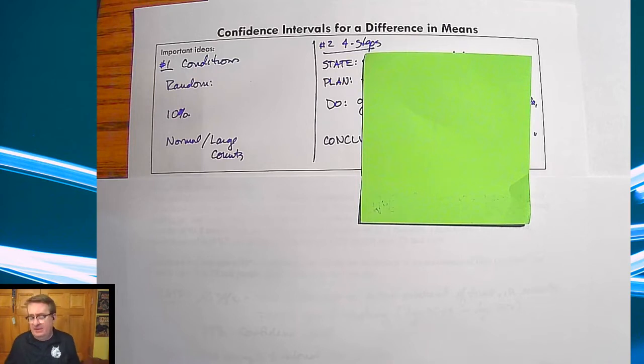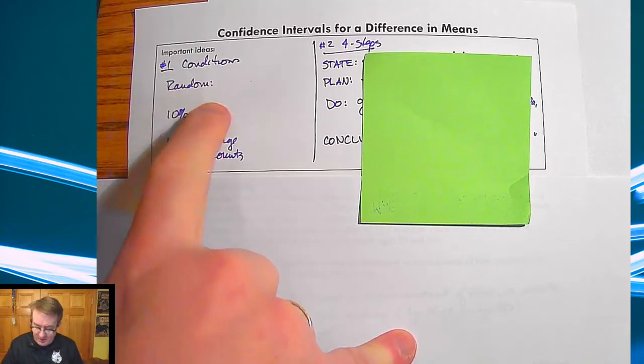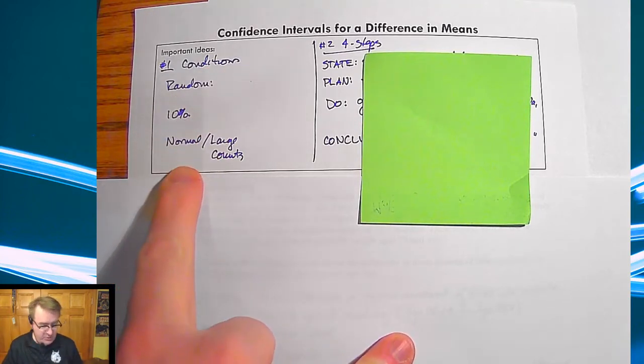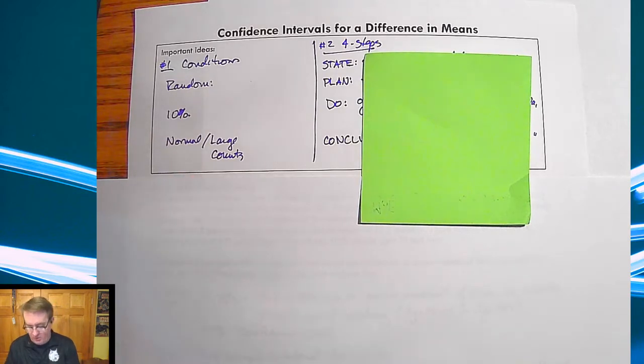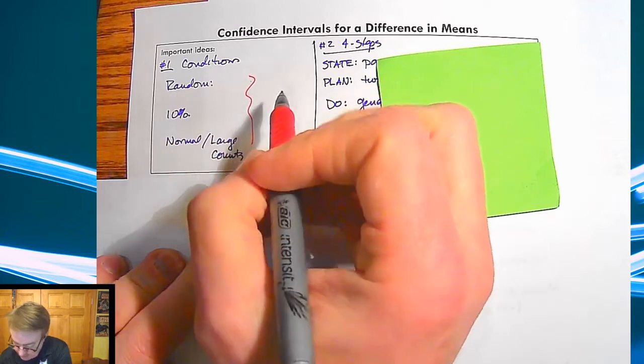Conditions should not be a surprise: random, 10% rule, normal or large counts. The only thing that you have to remember here is what do we do before - you have to make sure that these are for each population.